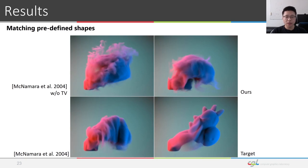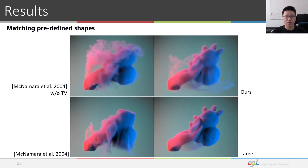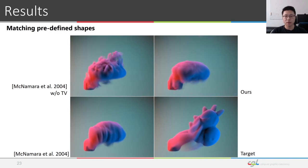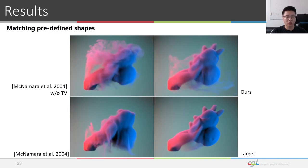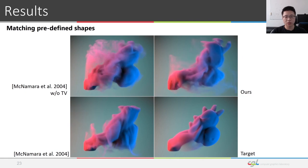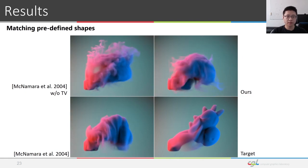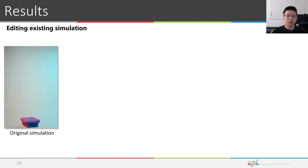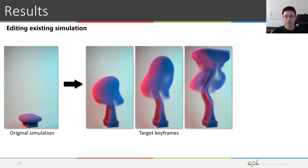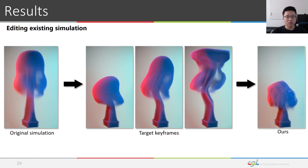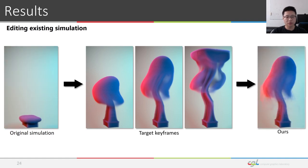The following 3D results show some applications of our methods. Predefined shapes can be used as target keyframes. In this example, the target is a rubber toy mesh composed with part of the smoke. Our method can also be used to generate a new simulation after editing existing simulations. Three frames from an existing simulation is extracted. The user warps and deforms the extracted frames to create three target keyframes. Our method takes the three target keyframes for generating the new simulation.